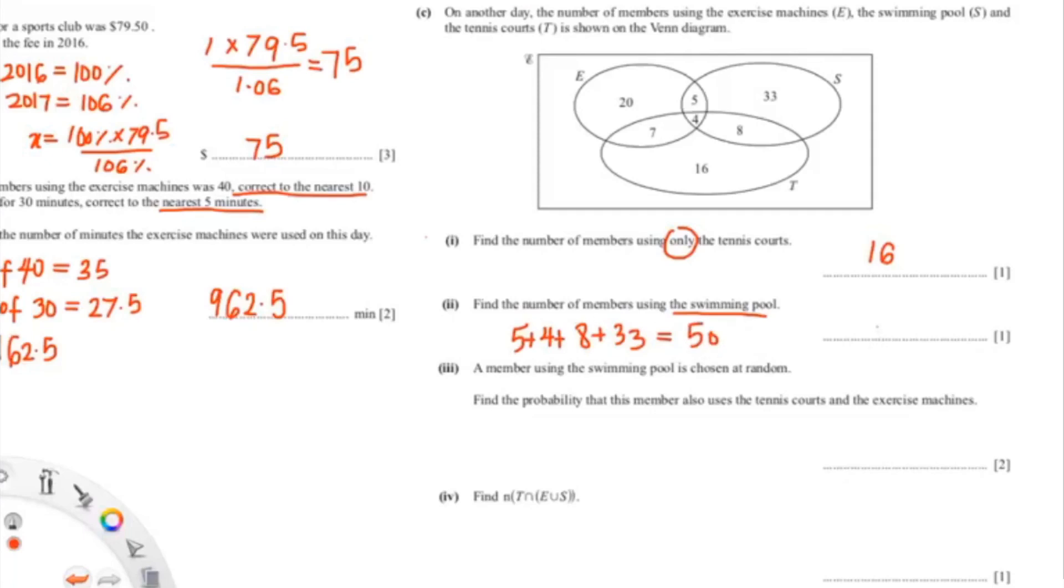And that would be 50, so the answer is 50. The next question is: a member using the swimming pool is chosen at random. Find the probability that the member also uses the tennis court and the exercise machine.